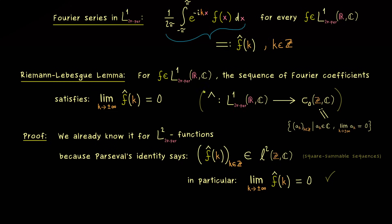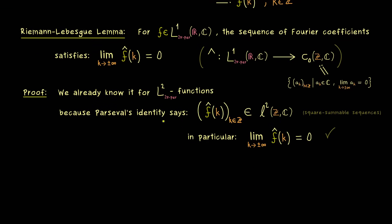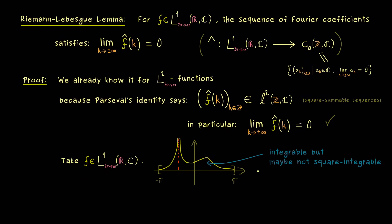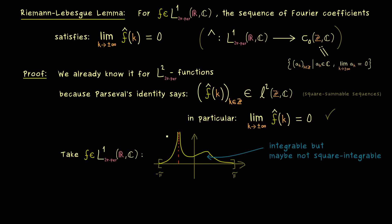However, if we take a function which is in L1 but not in L2, we don't know anything yet. The graph of such a problematic function could explode somewhere — it does not have to be bounded at all. The only requirement is that the integral of the absolute value is still finite. But we cannot assume the same holds for the absolute value of f squared; the area could be infinite. This is exactly the case we need to address.